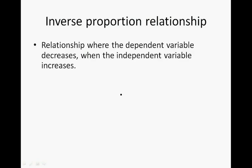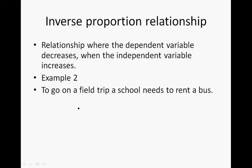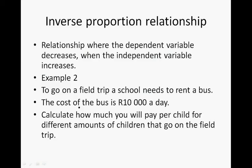Inverse proportion relationship. This is a relationship where the dependent variable decreases when the independent variable increases. So if the independent variable increases, the dependent variable decreases. Example: to go on a field trip, a school needs to rent a bus. The cost of the bus is R10,000 a day. Calculate how much you will pay per child for different amounts of children that go on the field trip.